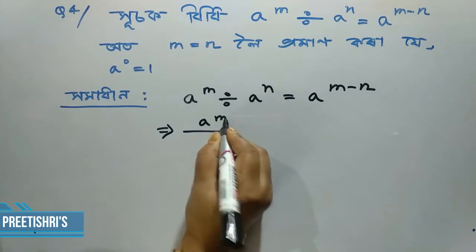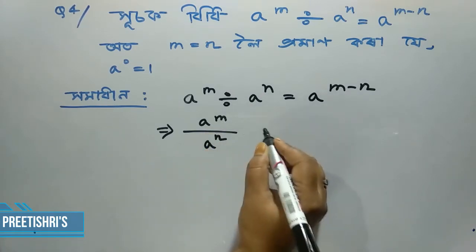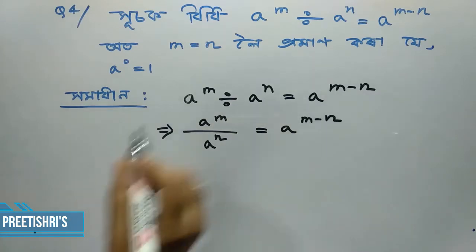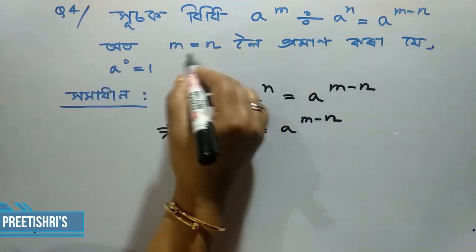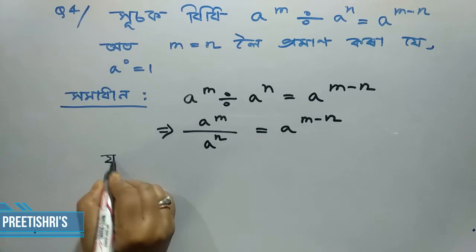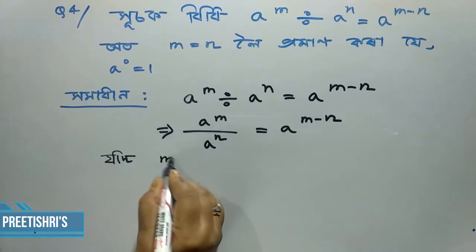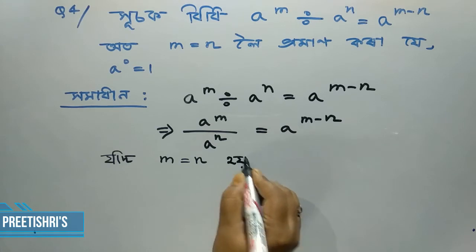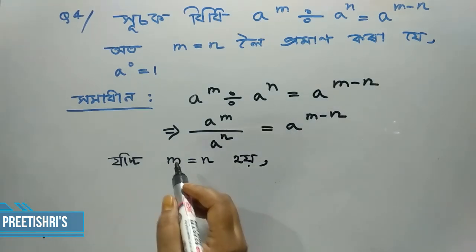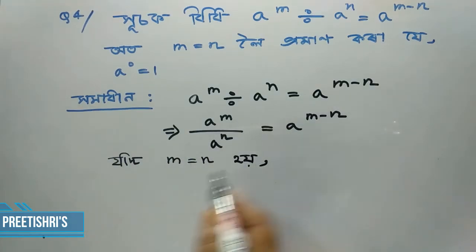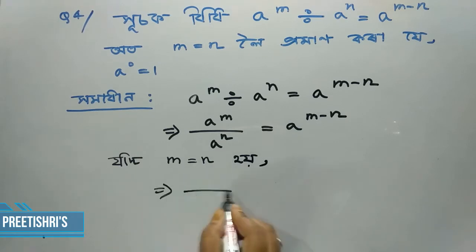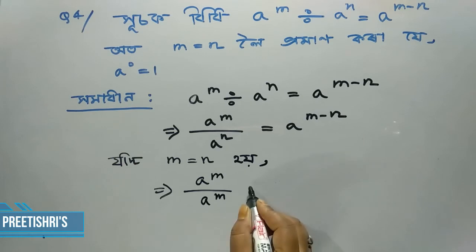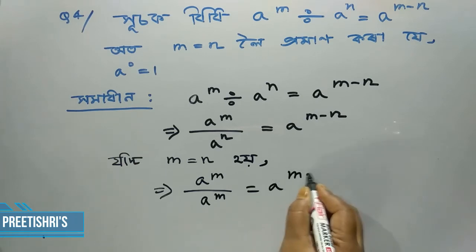A to the power m divided by a to the power n equal to a to the power m minus m. Now if m equal to n, then when m equal to n, we write: a to the power m divided by a to the power m — what do we get? We get a to the power m minus m.